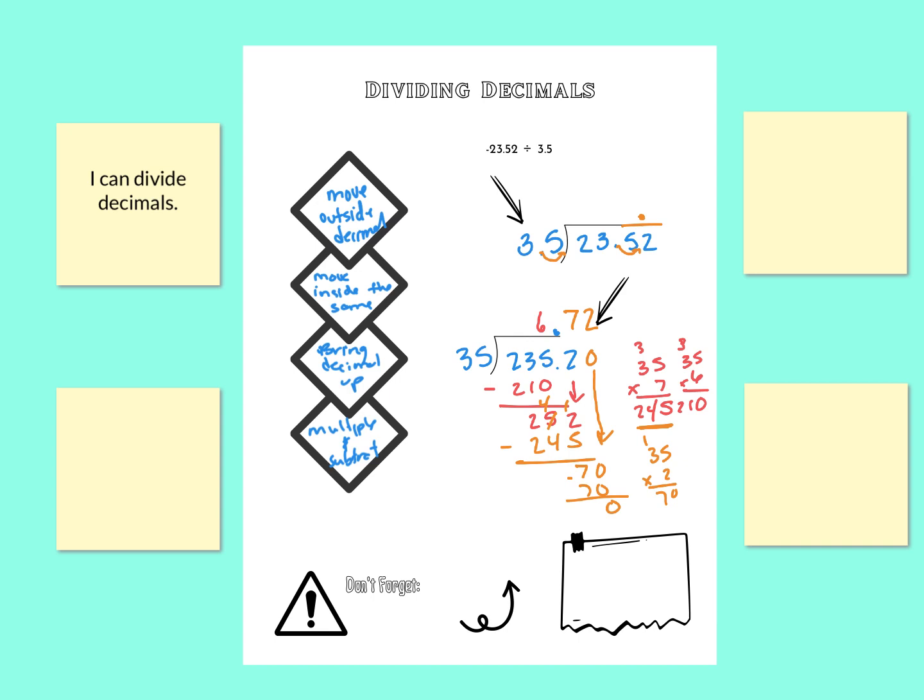So the last thing I need to do, like it says down here, don't forget. Just like we have been doing, we have to check the sign. So get those integer rules out if you need them. If they are the same sign, it's going to be positive. If they are different, it's going to be negative. So if we look back up here at our problem that we have, we've got a negative divided by positive. So there are different signs, which means my answer is going to be negative. So we get negative 6.72.